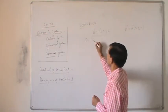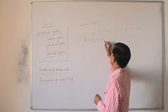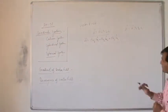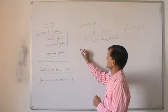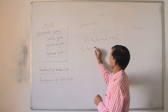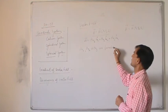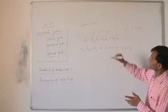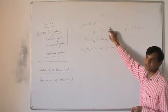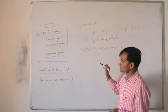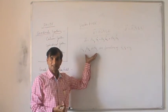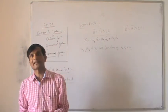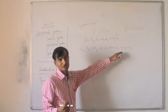In general, a vector can be written as A_u1 a_u1 plus A_u2 a_u2 plus A_u3 a_u3, where A_u1, A_u2, and A_u3 are the components along the three axes and are functions of u1, u2, u3. These components are known as components of the vector along the directions of u1, u2, and u3.